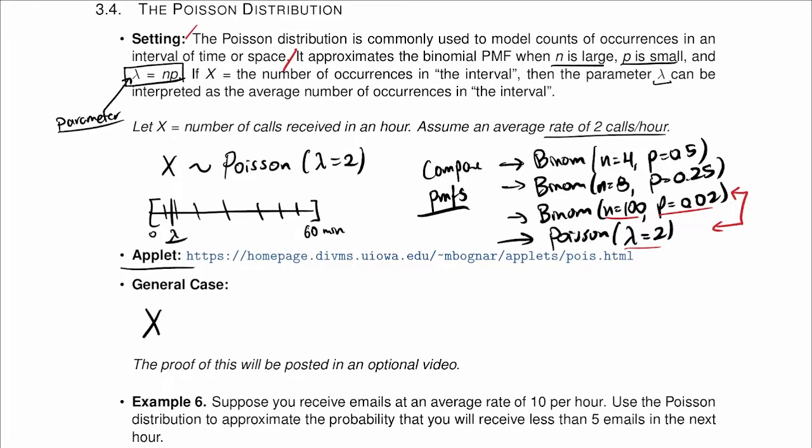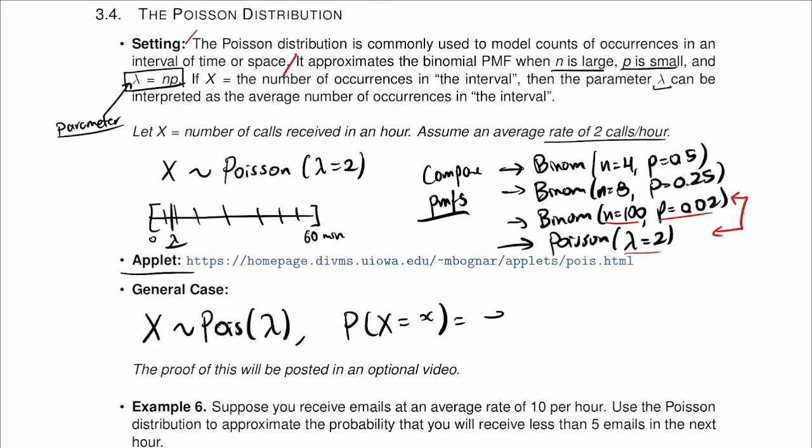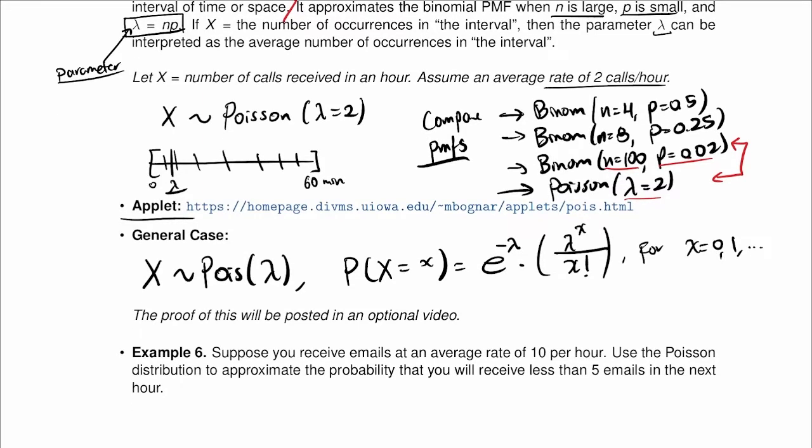You can calculate the probability using this link, and in general case, we have that if x is our random variable distributed Poisson with parameter lambda, then the probability of x equal to the particular number x is equal to e to the minus lambda times lambda to the x over x factorial, for x equal to 0, 1, and so on.